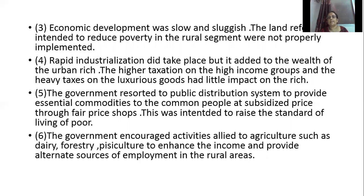The sixth strategy was encouraging activities allied to agriculture, such as dairy industry, forestry, and fishiculture, to enhance income and provide alternative sources of employment in rural areas. Since agriculture provides employment mainly in the rainy season, government encouraged these allied activities so rural people could earn income during other months.